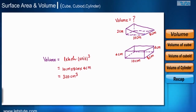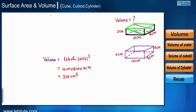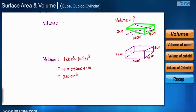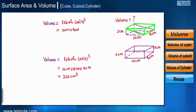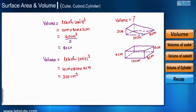For the upper part, we treat it as half of a cuboid with length 10 cm, breadth 8 cm, and remaining height 2 cm. The volume of that full cuboid would be 10 × 8 × 2 = 160 centimeter cubed. Half of this is 80 centimeter cubed, which is the volume of the upper part.